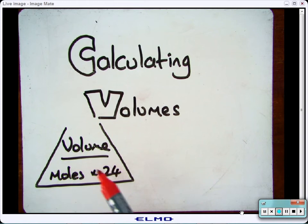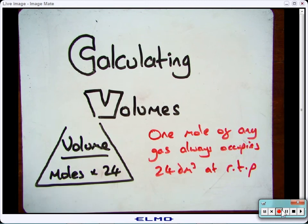This is the equation that you'll need to know. So to work out the volume, it's the number of moles times by 24. The reason for that equation is this: one mole of any gas always occupies 24 decimeters cubed at room temperature and pressure.